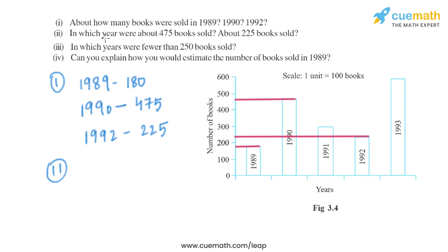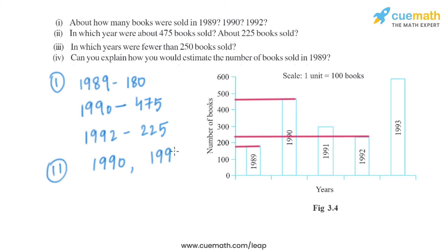The next part of the question asks in which year about 475 books were sold and about 225 books were sold. As we can see, in 1990 approximately 475 books were sold, and in 1992 approximately 225 books were sold.